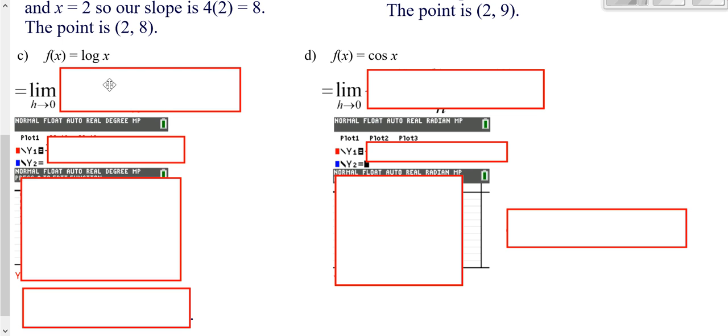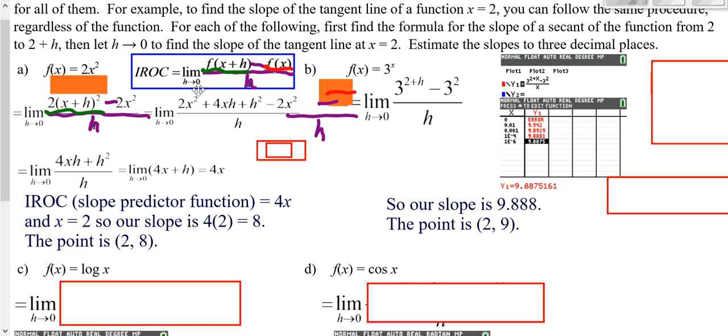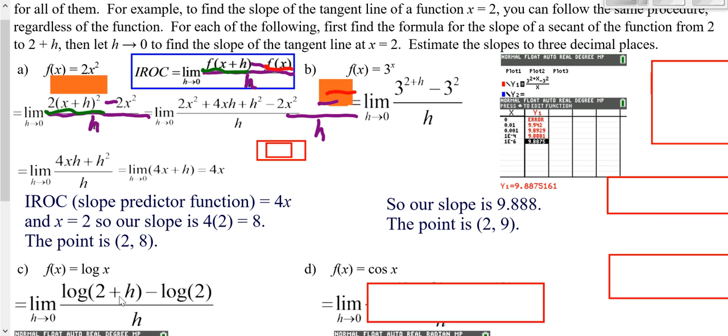Down below here, we're going to be doing the exact same thing. We're going to be using our IROC formula up here. We would plug in 2 for our x, get 2 plus h that we plug in, minus log of 2. Over here, when we're doing this one, we would plug in 2 and we get 2 plus h after our cosine, minus 2.